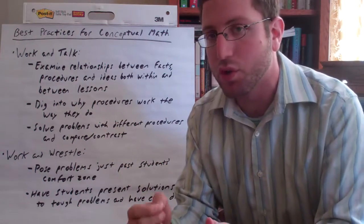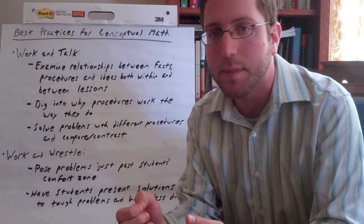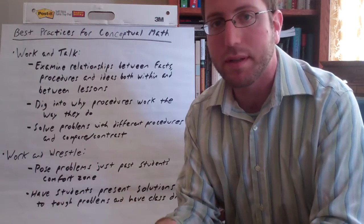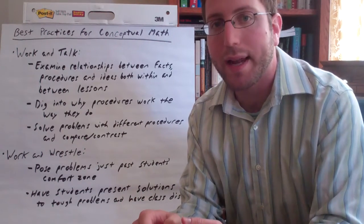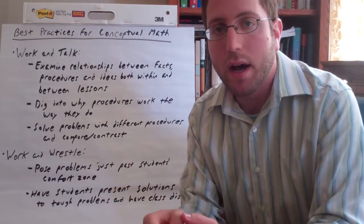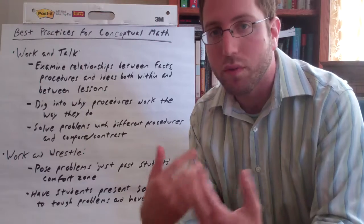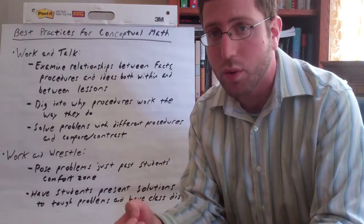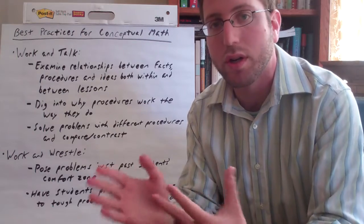Next, dig into why procedures work the way they do. The example the authors give is: why do we add from right to left? Why is that just the way we do things? Why do we add columns that way, and why couldn't we do it the other way? By asking that kind of question to students, you're really getting them to think: this isn't just a rule, there's a reason why we do it, and there's a reason why we couldn't do it in other ways.